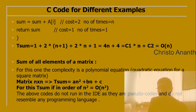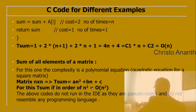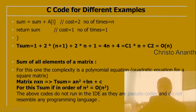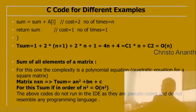For summing all elements of an n×n matrix, the complexity is a polynomial equation: an² + bn + c. So T(sum) is O(n²). Note these are pseudocode examples that don't resemble any specific programming language syntax and won't run in an IDE.